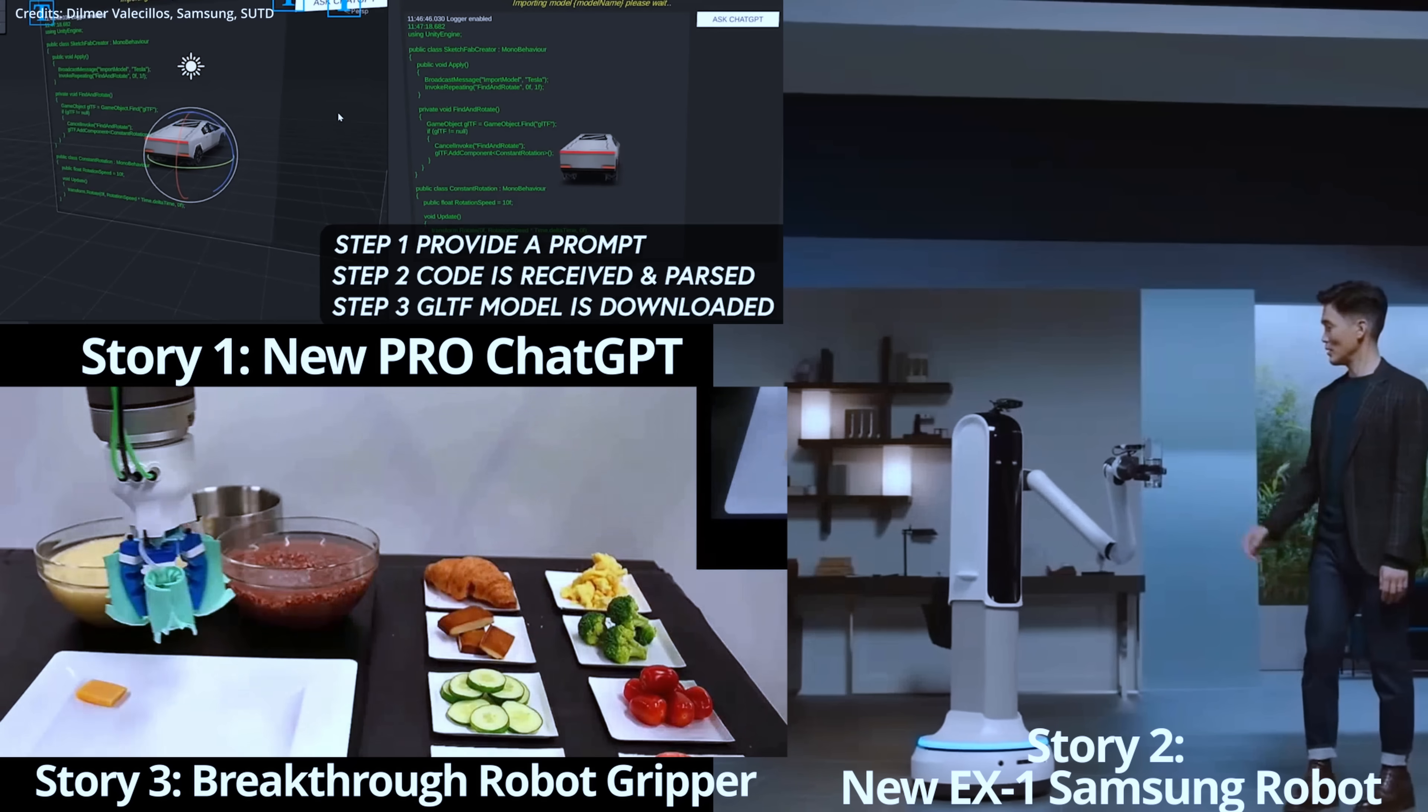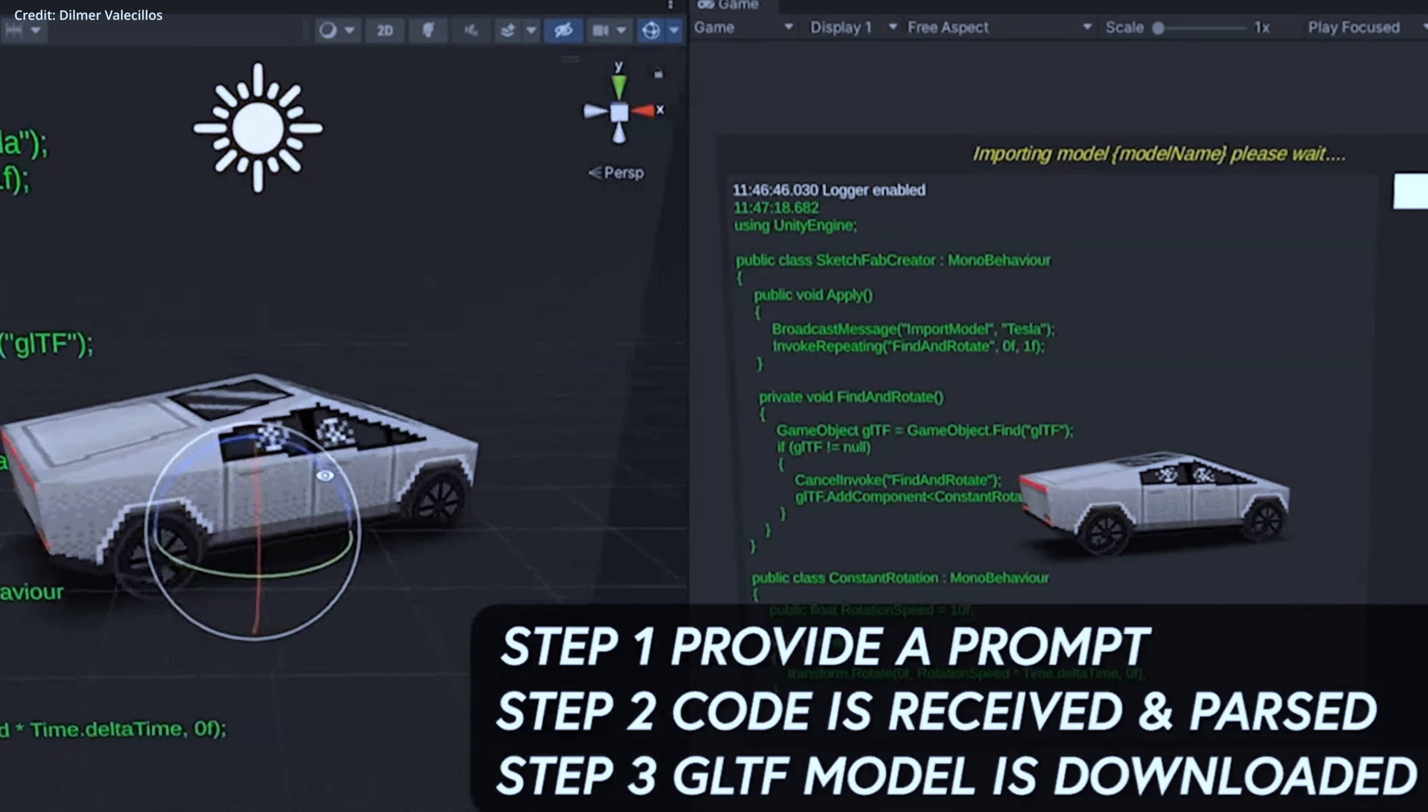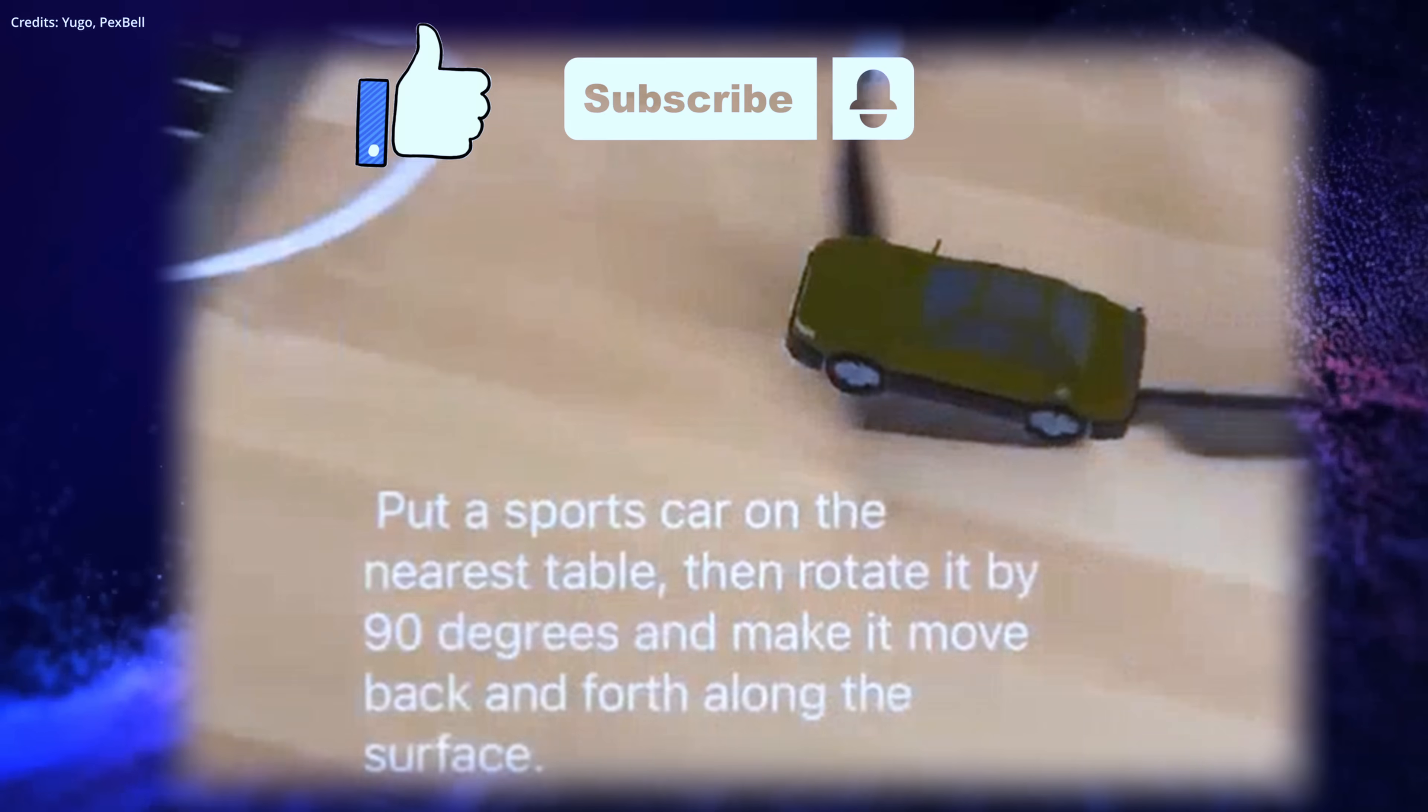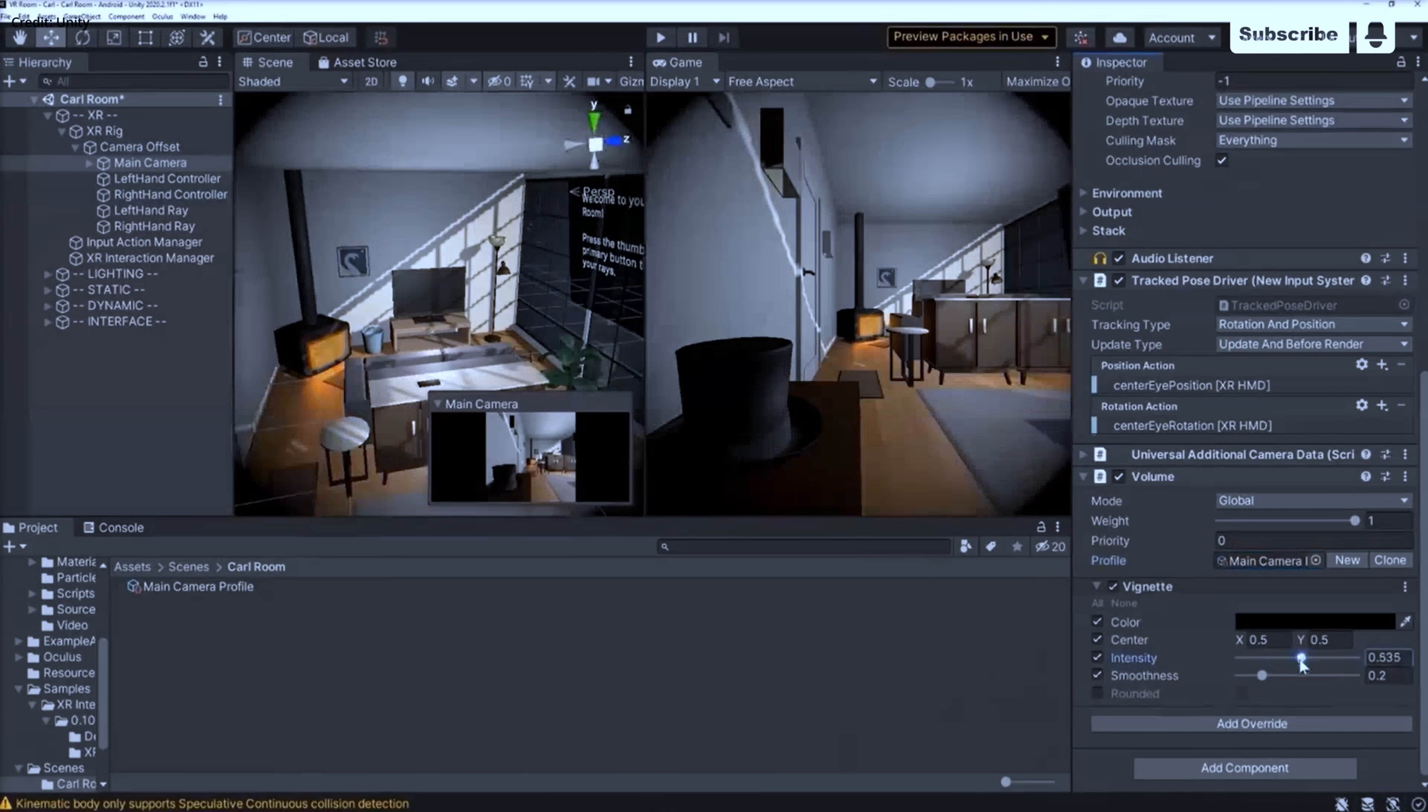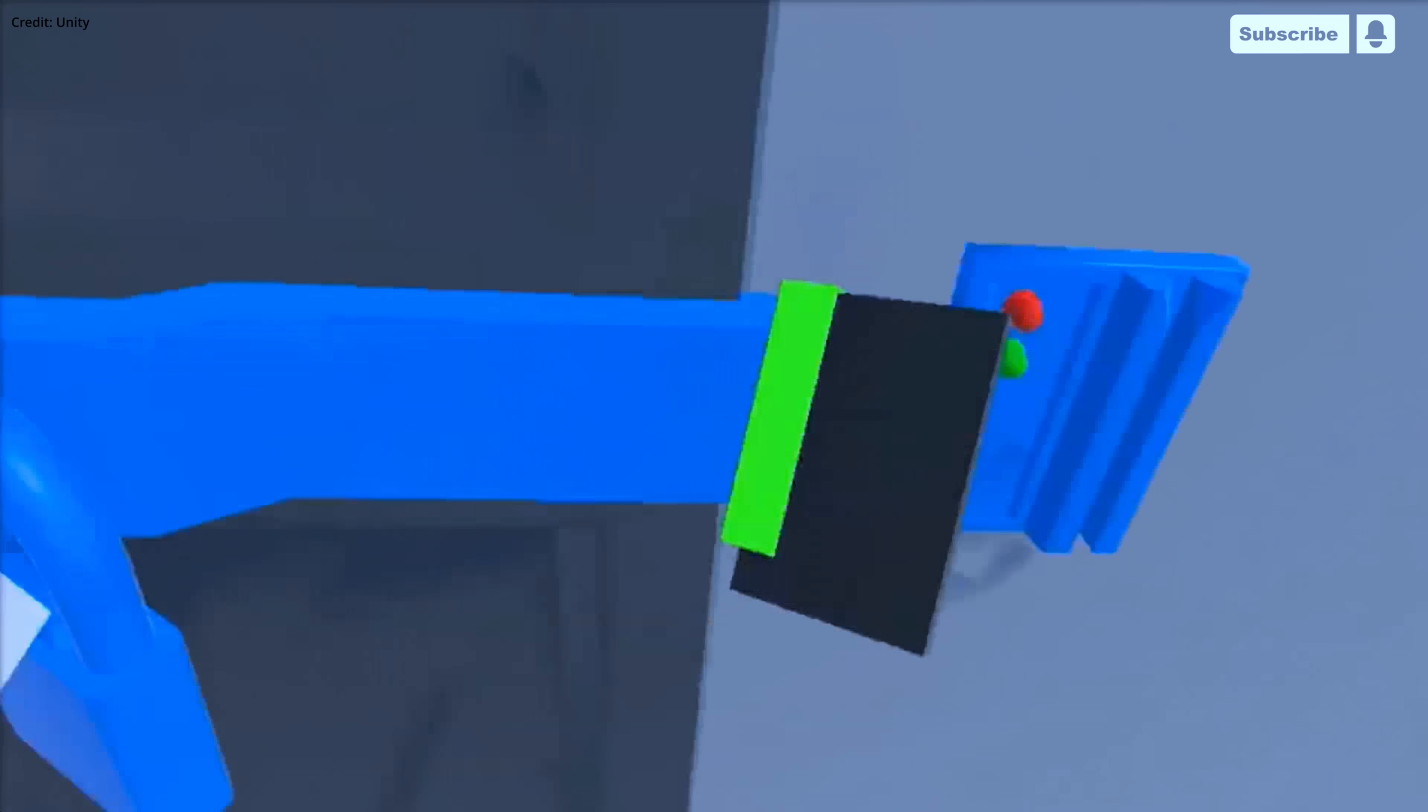A new pro ChatGPT version was revealed by OpenAI. With OpenAI exploring ways to generate revenue from ChatGPT and improve the ability to distinguish artificial intelligence generated text, a professional version of ChatGPT that can handle a larger volume of characters is being developed and planned for launch.